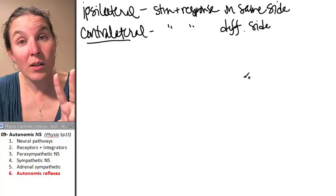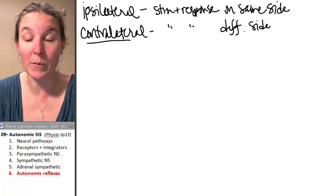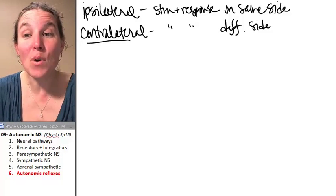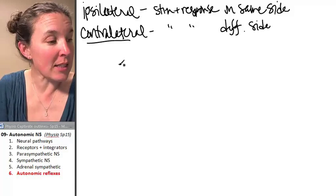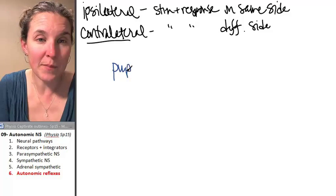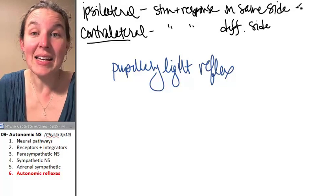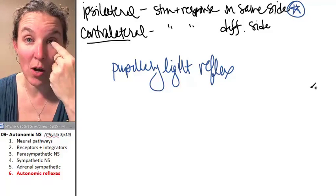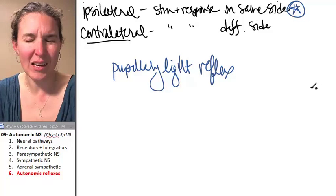We're going to look at two different reflexes that are related to pupil constriction in your eyeball. One of them is contralateral and one of them is ipsilateral. There is the pupillary light reflex, and that is an ipsilateral reflex. You shine a light in this eyeball and this pupil is going to constrict, and that makes perfect sense.